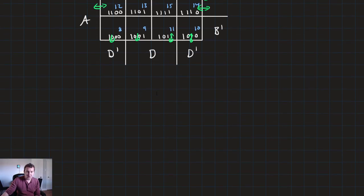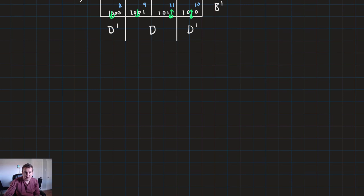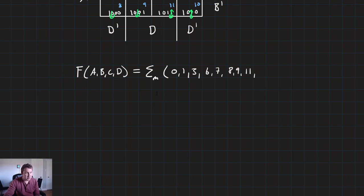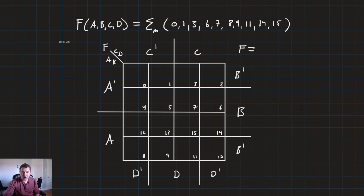Okay, so let's work a couple of examples, starting with this. Let's do F, which is a function of four variables, A, B, C, and D, is equal to the sum of minterms 0, 1, 3, 6, 7, 8, 9, 11, 14 and 15. See these get pretty long.